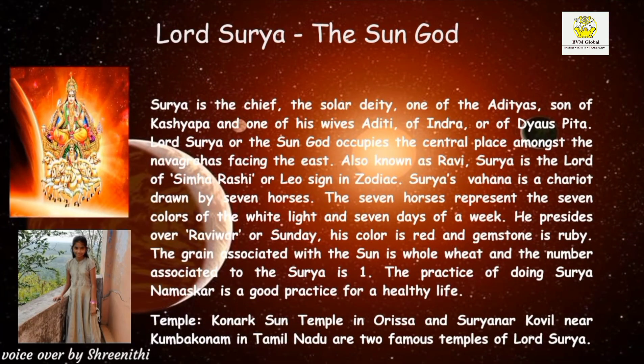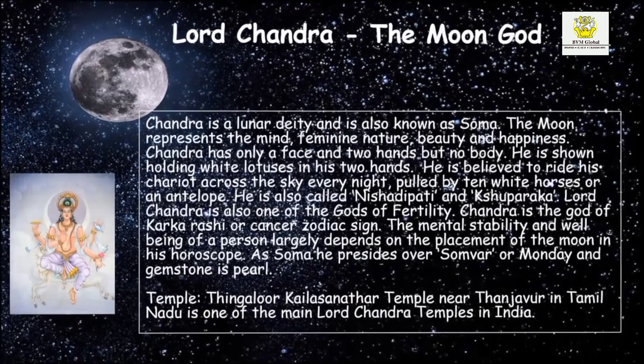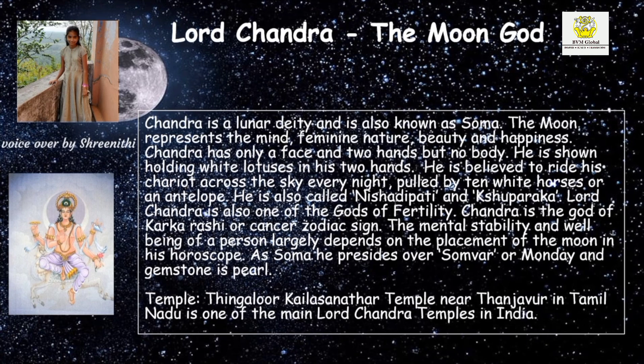Lord Surya, the Sun God: Surya is the chief solar deity, son of Kashyapa and one of his wives Aditi, and related to Indra. Lord Surya occupies the central place amongst the Navagrahas, facing the east. Chandra, the Moon God: Chandra is a lunar deity also known as Soma. The moon represents the mind, feminine nature, beauty and happiness. Chandra is shown holding white lotuses in his two hands.